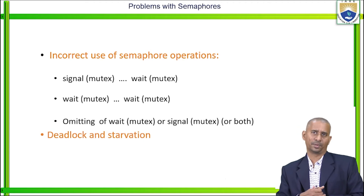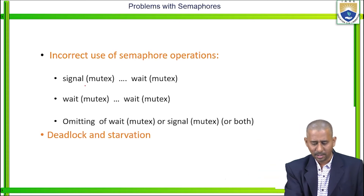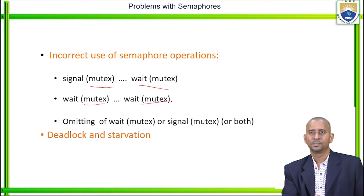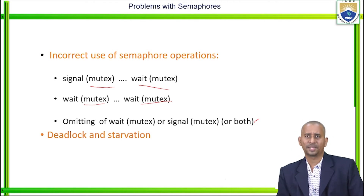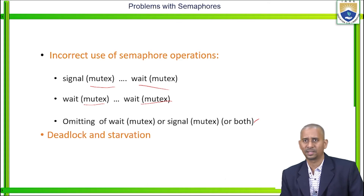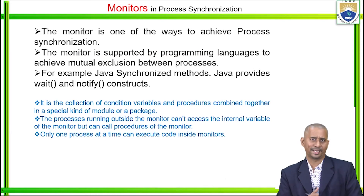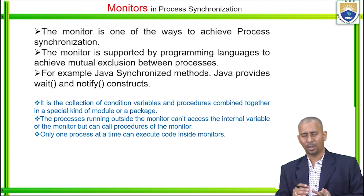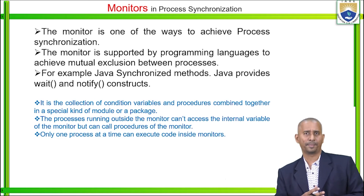What are the various problems with semaphores? One is incorrect use of semaphore operations, such as: signal(mutex) before wait(mutex), wait(mutex) and wait(mutex) again, or omitting wait(mutex) or signal(mutex) or both. The problems that arise are deadlocks as well as starvation. We will discuss later what deadlock is and what the various methods for handling deadlocks are. These issues relate to the classical problems of synchronization — bounded buffer, readers-writers, and dining philosophers.